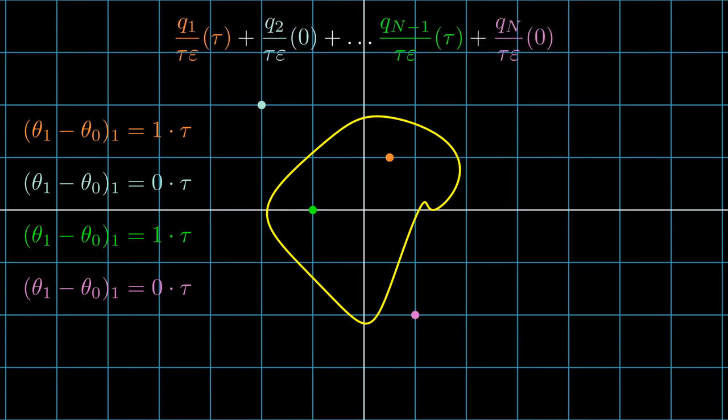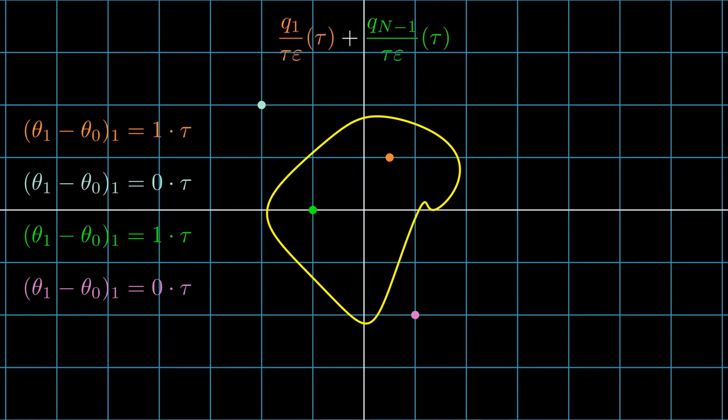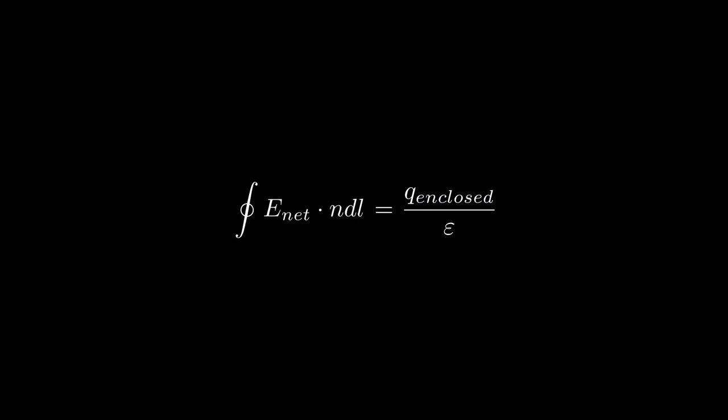The point charges that are in the closed line correspond to a tau, and the point charges that are out of the closed line correspond to a zero. All of the other point charges not shown also correspond to a zero. After some simplifying, I end up with the enclosed charge over epsilon naught. Now the 2D version of Gauss's law is proven.